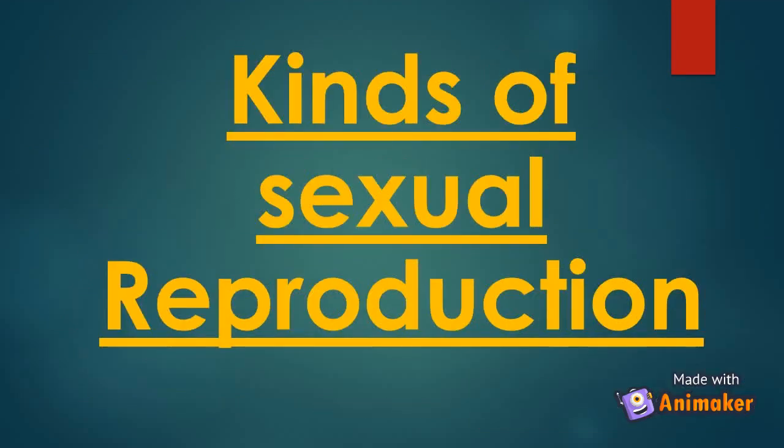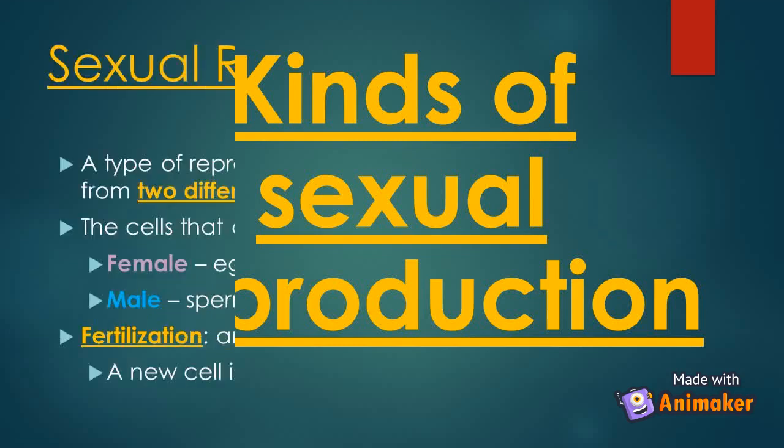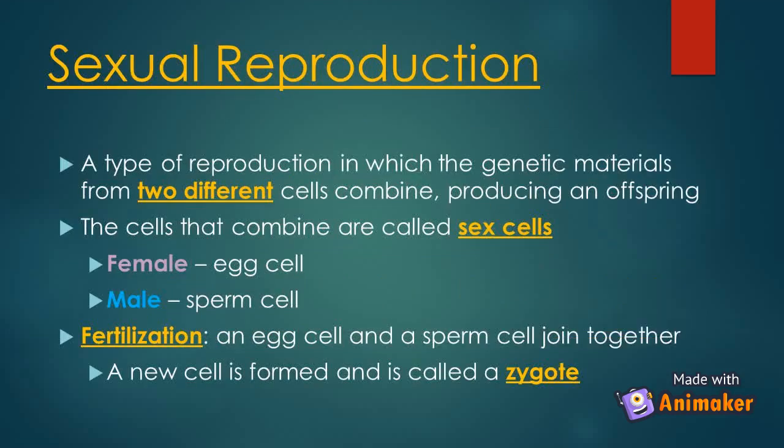The second type of reproduction is sexual reproduction. Sexual reproduction is a type of reproduction in which the genetic materials from two different cells combine to produce offspring. The cells that combine are called sex cells or gametes — the female is the egg cell and the male is the sperm cell. Fertilization happens when an egg cell and a sperm cell join together, forming a new cell called a zygote.